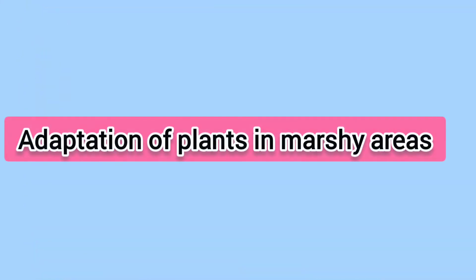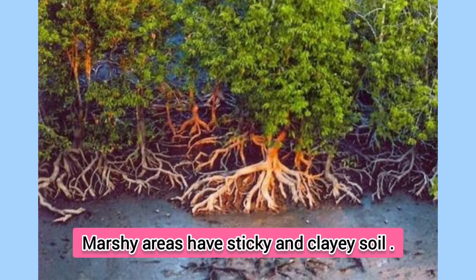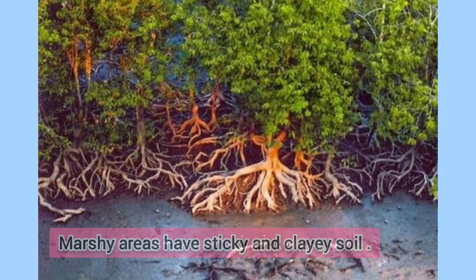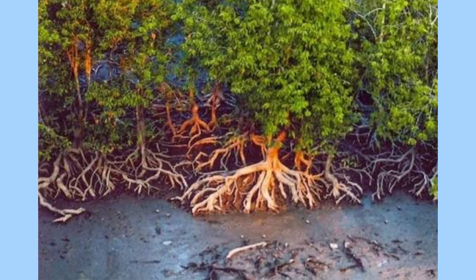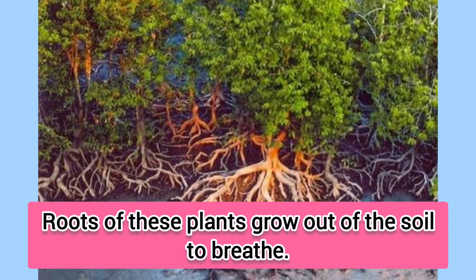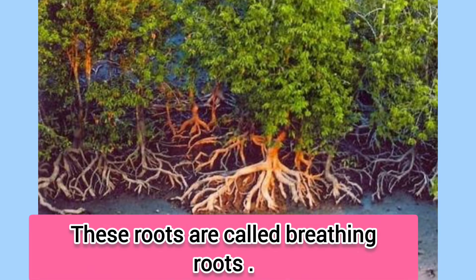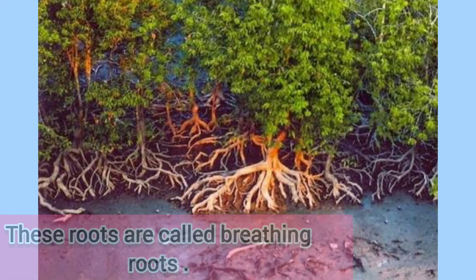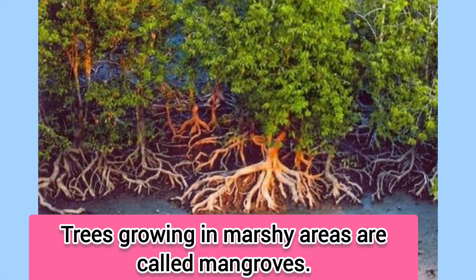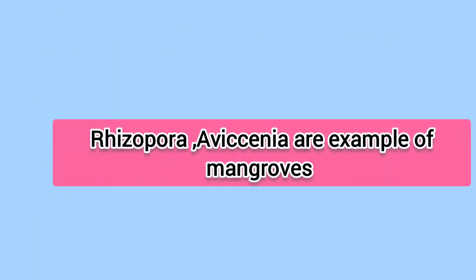Adaptation of plants in marshy or swampy areas: Marshy areas have sticky and clayey soil. In these areas, it is difficult for plants to grow as air cannot reach the roots. Thus, roots of these plants grow out of the soil to breathe from the air. Such roots are called breathing roots. Trees growing in marshy areas are called mangroves. Rhizophora and Avicennia are examples of mangroves.